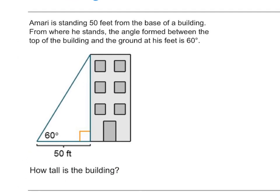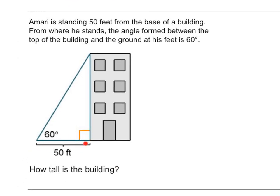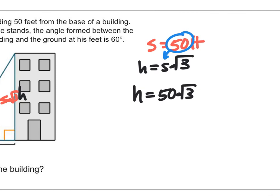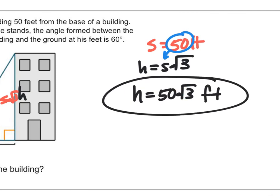Amari is standing 50 feet away from the base of a building. The angle formed between the top of the building and the ground at his feet is 60 degrees. This is a 30-60-90 triangle. The shorter leg S equals 50 feet. The height h equals S times the square root of three, so I plug in 50 to get h equals 50 times the square root of three feet.